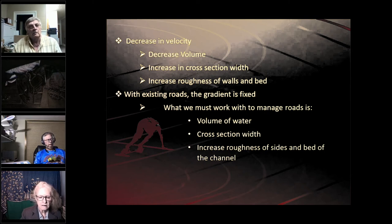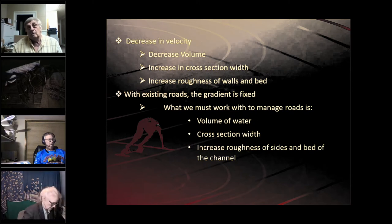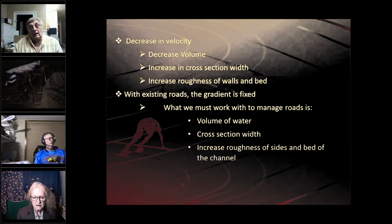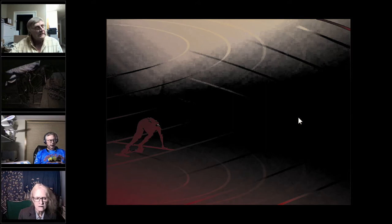Decreases in velocity come from a decrease in volume, an increase in cross section width — wider drainage means lower velocity — and an increase in the roughness of the walls or bed of the channel. With existing roads, which most of you have inherited when you purchased your land, the gradient is fixed by how the road was built. So what we have to work with is the volume of water, the cross section width, and the roughness of the sides and bed of the channel.